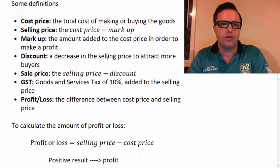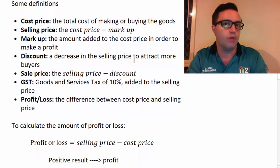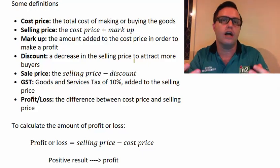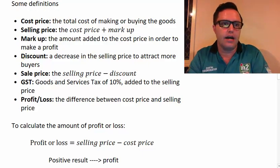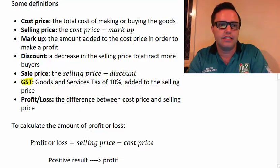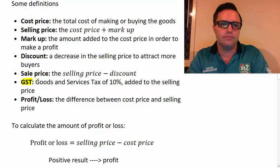Discount is a decrease in the selling price to attract more buyers for something. So you might typically see that as a store is having a sale, if that's the case of selling things at some kind of discount. The sale price is the selling price, obviously minus the discount is applied. GST is something that's sort of pretty technical, but that all you need to worry about at the moment is it's a goods and services tax of 10% added to the selling price.